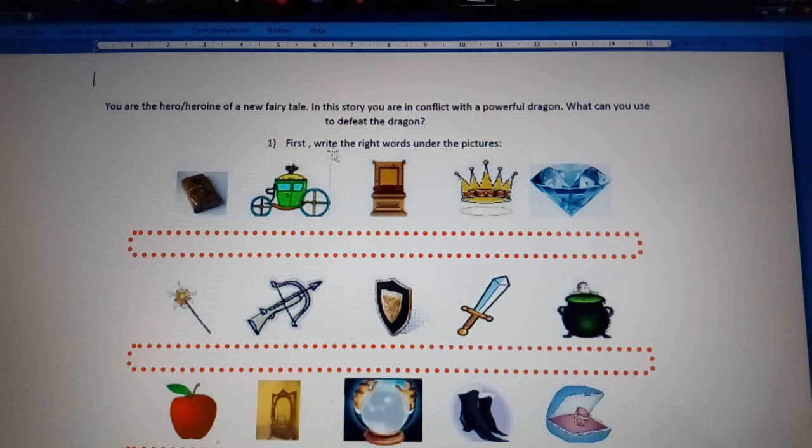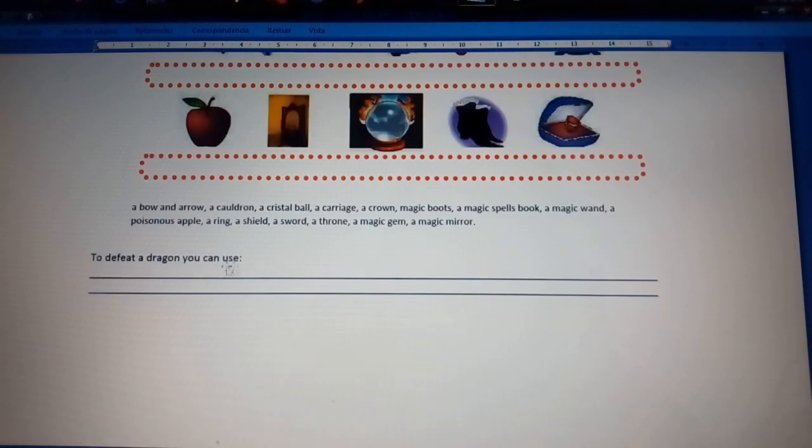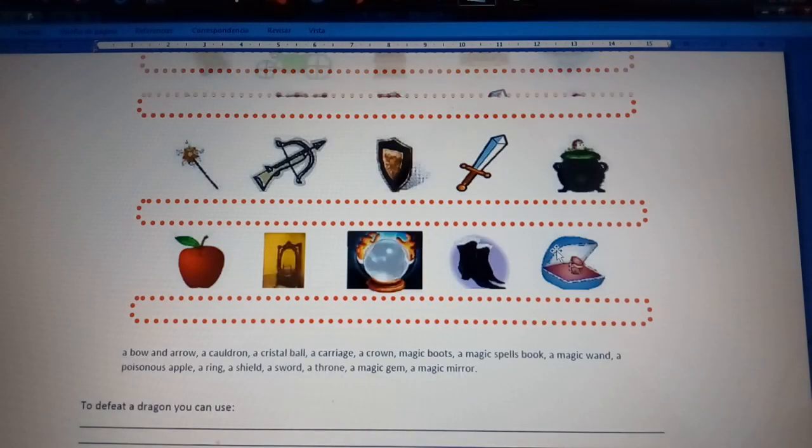First, you need to write the words under the pictures. You have the options: a bow and arrow, a cauldron, a crystal ball, a carriage, a crown, magic boots, a magic spells book, a magic wand, a poisonous apple, a ring, a shield, a sword, a throne, a magic gem, and a magic mirror.